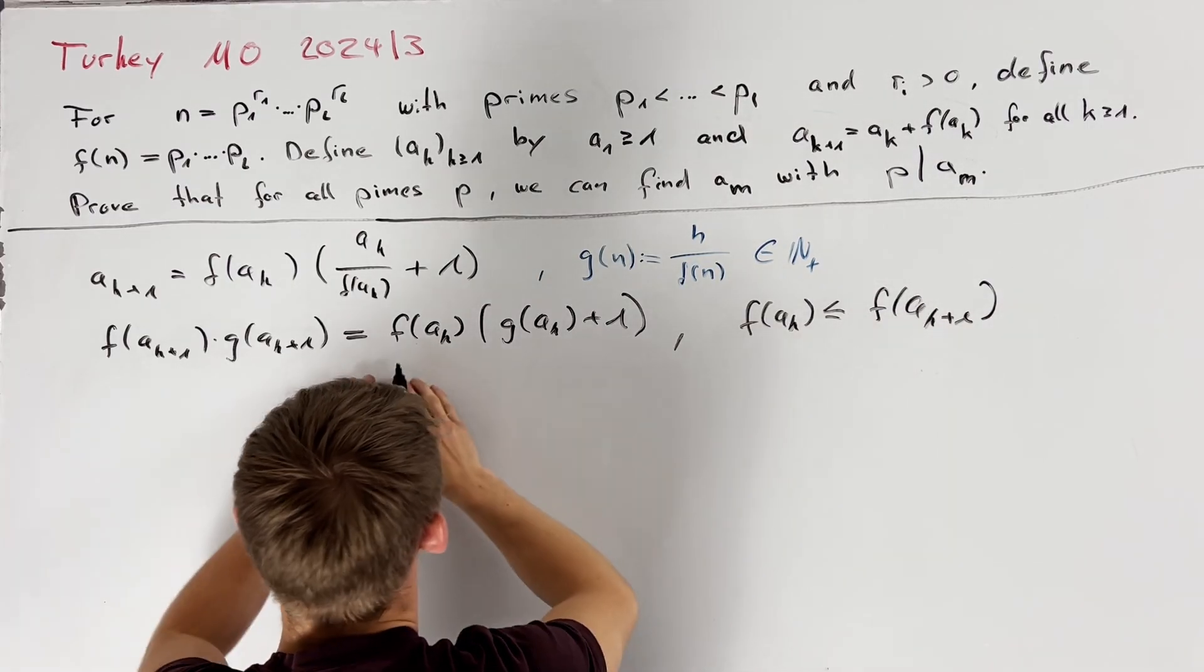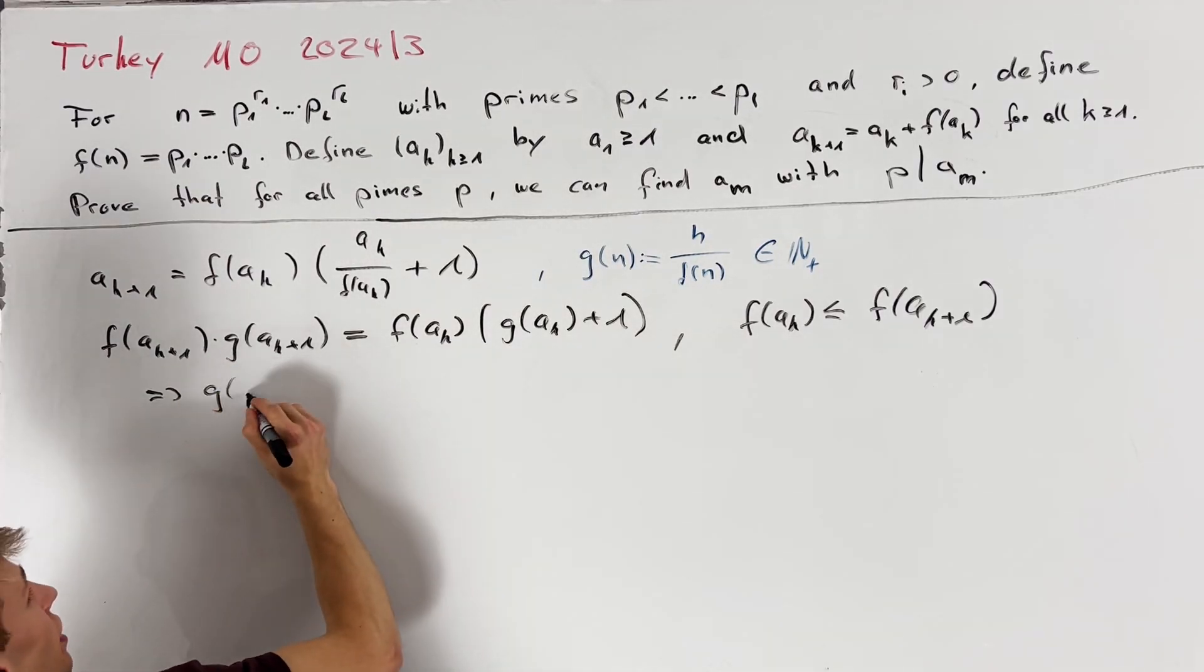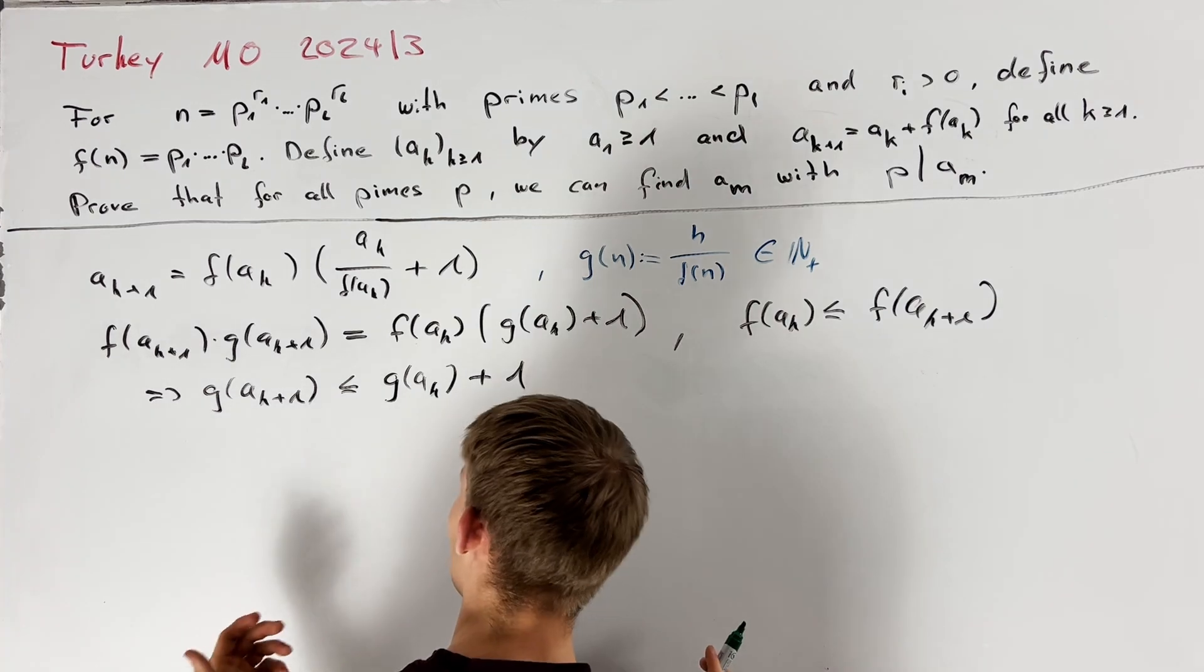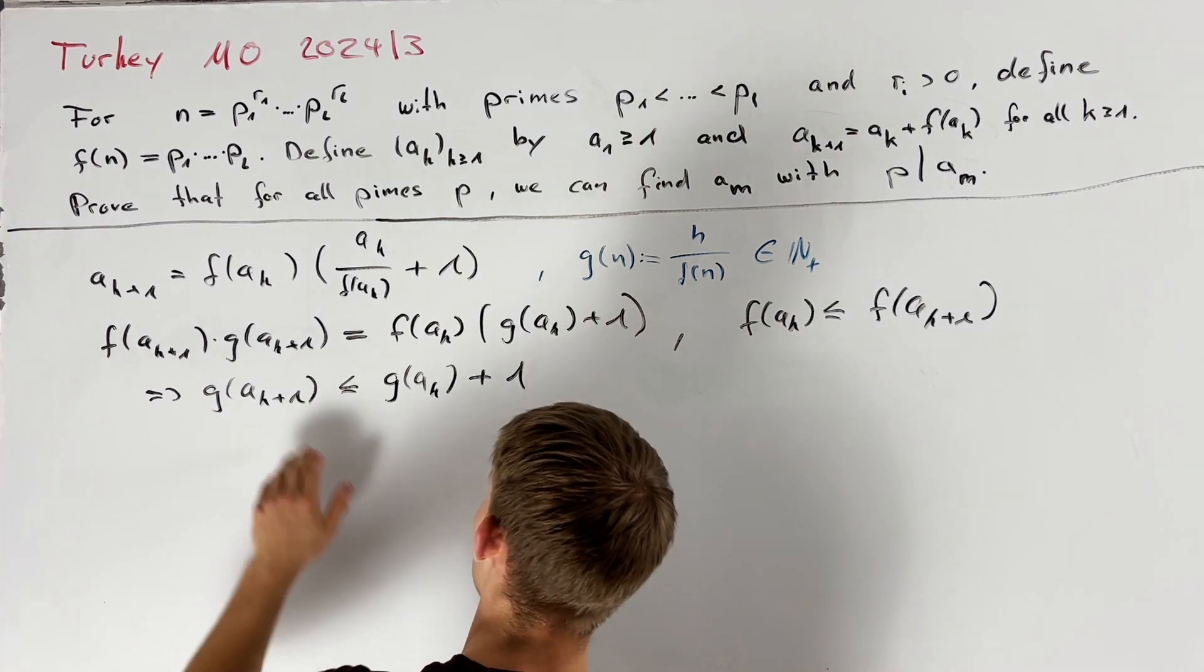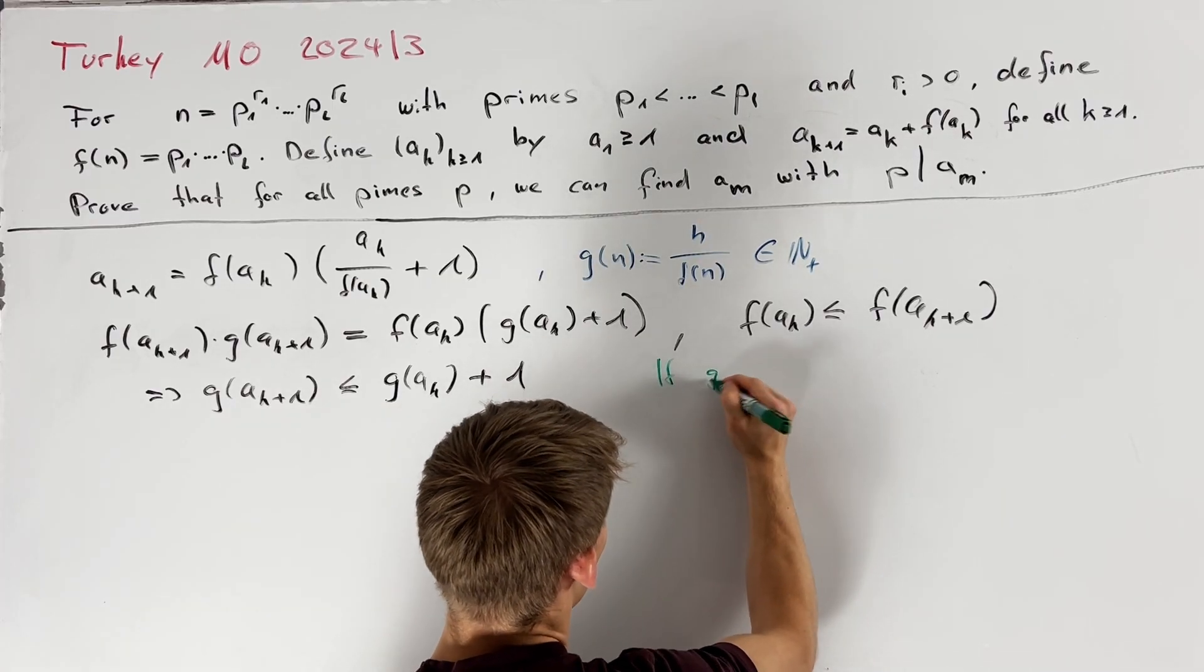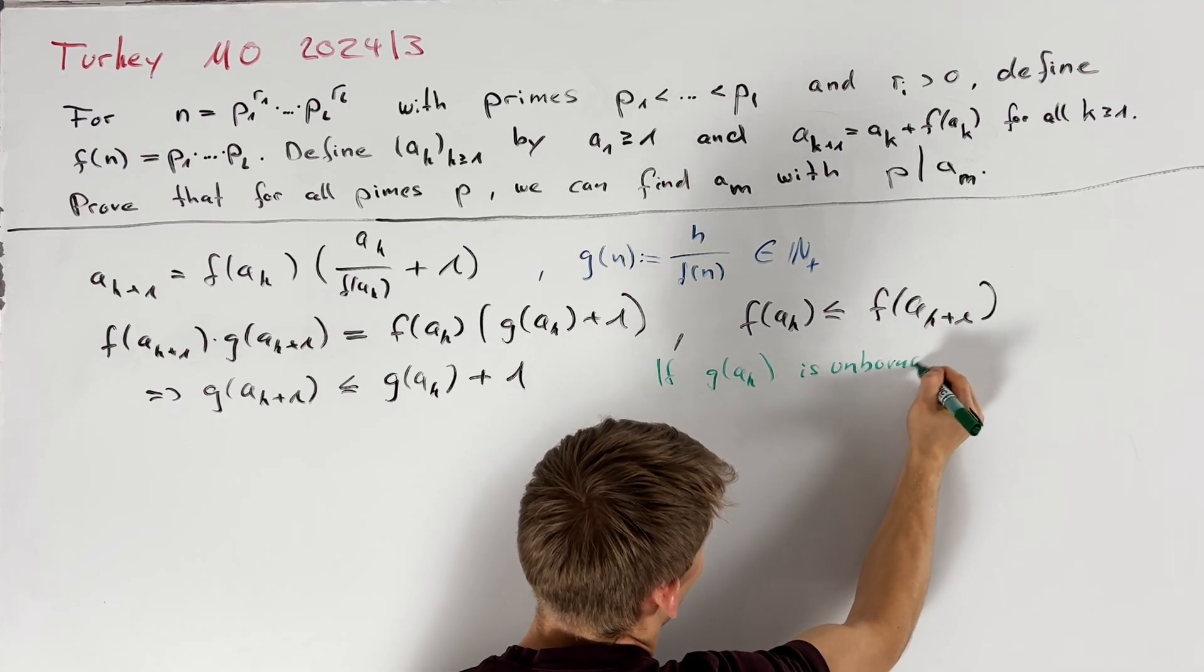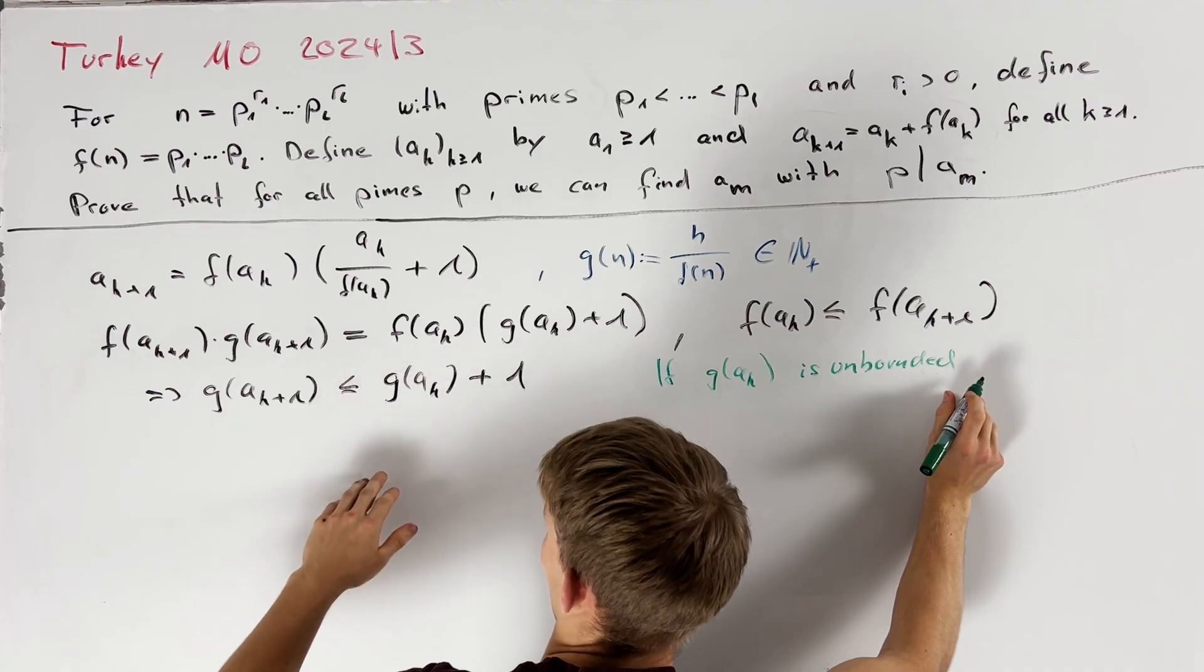This directly implies with this equation here that g of a_{k+1} is less than or equal to g of a_k plus 1. In other words since g of a_k is a sequence of positive integers this inequality here implies that if g of a_k is unbounded then g of a_k attains every value greater than or equal to g of a_1.